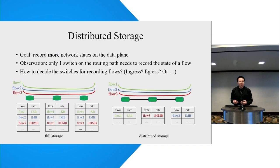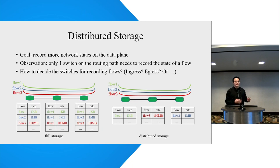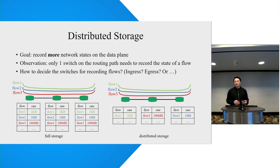The first goal of MEW is to record more network state on the data plane. The left figure shows the existing solution using full storage — the switch on the routing path needs to record the state of all passing flows, which introduces huge storage overhead. We observe that only one switch on the routing path needs to record the state of a flow, so we propose distributed storage, as shown in the right figure. Using distributed storage, we can save a lot of memory cost.